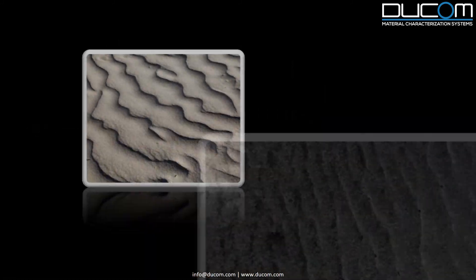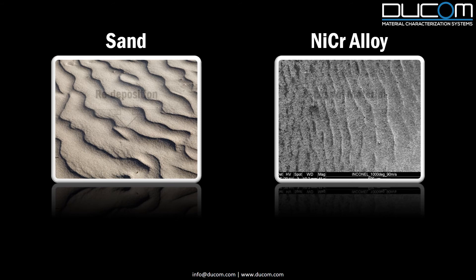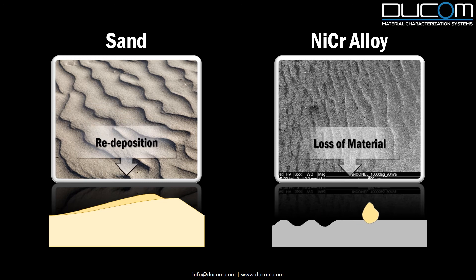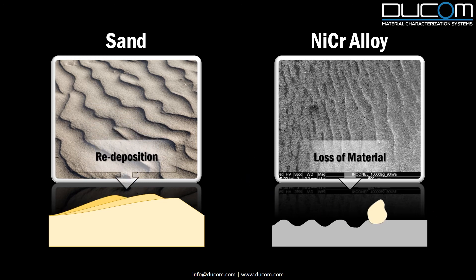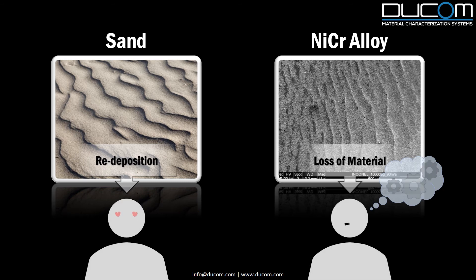Ripples on nickel-chromium alloy are caused due to loss of materials, whereas the ripples in the deserts are due to redeposition of sand particles. It means that these beautiful pictures of ripples can be a source of failure for a material scientist.